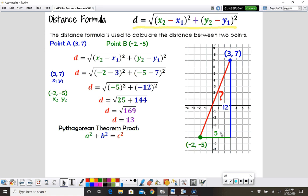Then we can just plug those values into our Pythagorean theorem. So a squared is going to be 5 squared, b squared is going to be 12 squared, and that's going to equal c squared. So we get 25 plus 144 equals c squared.